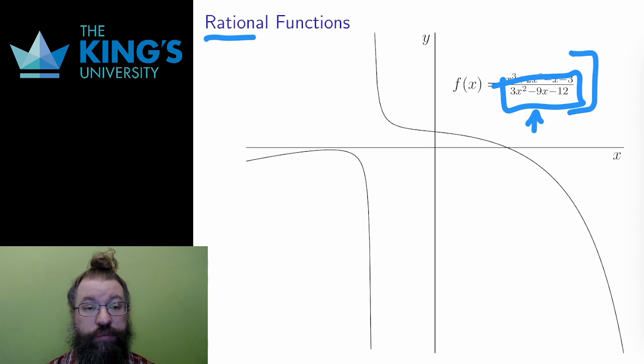In this example, x equals negative 1 in the denominator leads to 0. So x equals negative 1 is excluded from the domain.